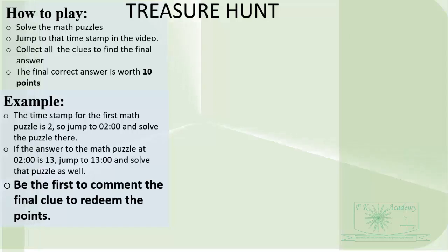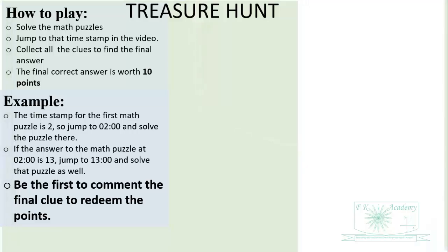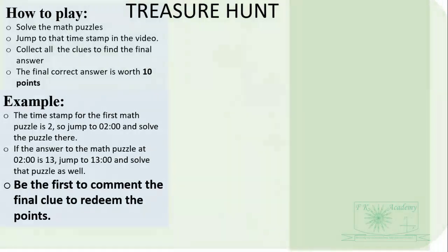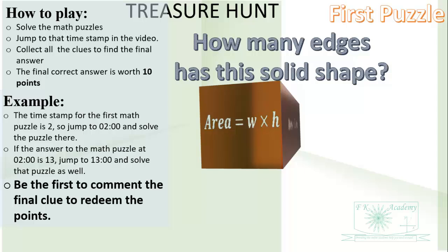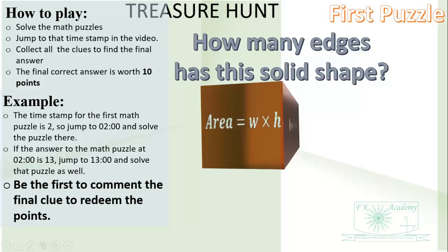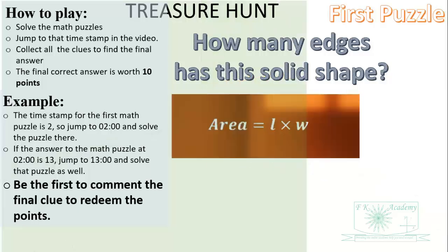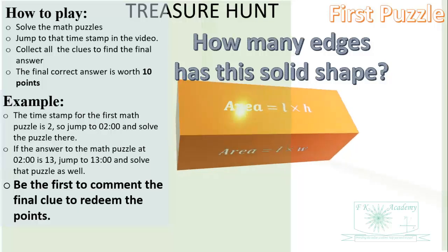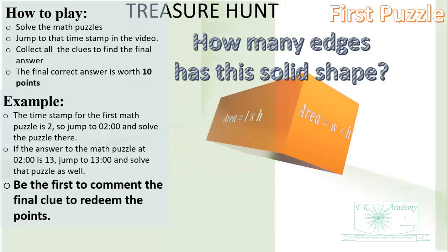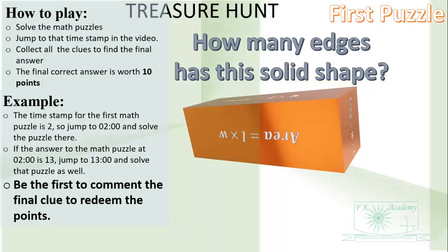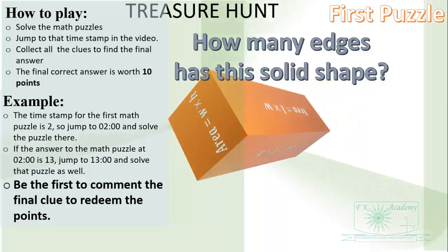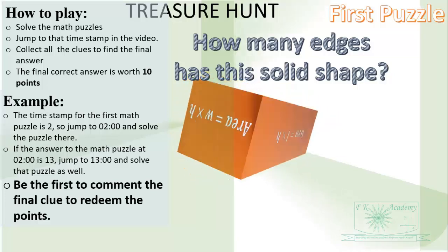Please continue in this order until you get to the final math puzzle, solve it, and be the first to comment your answer for 10 points. So here you have your first math puzzle — solve it. If your answer is 14, write 1-4 somewhere, then click on the timestamp 14.00 to take you to your next puzzle in that sequence.